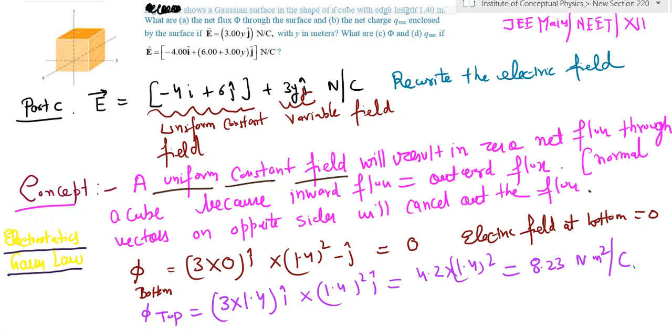One is a fixed part, the other is a variable part because the variable part has y written with it. Now many students would do this numerical in a standard way where they take each surface of the cube and find the flux through it using the concept of vector algebra.